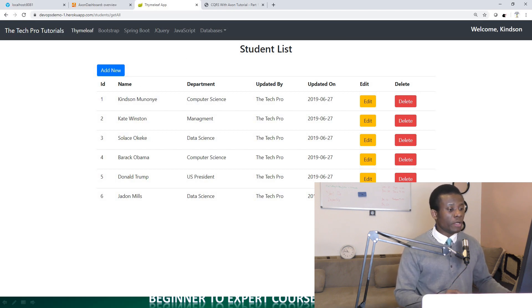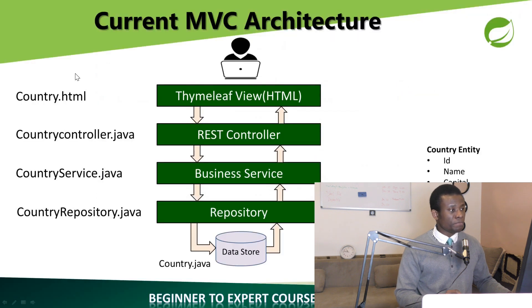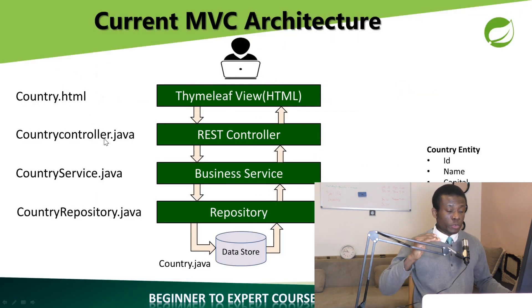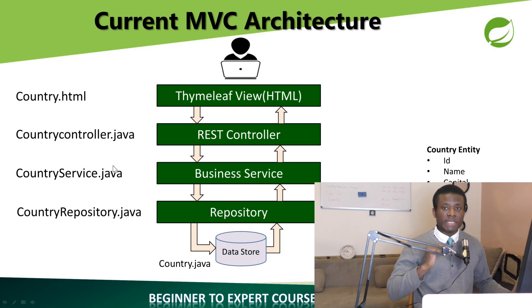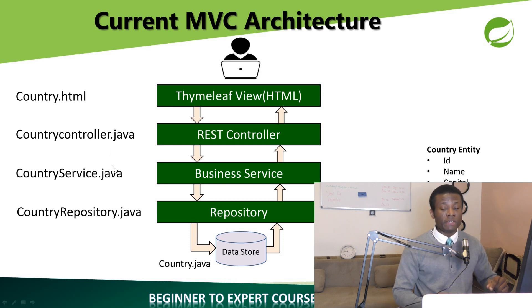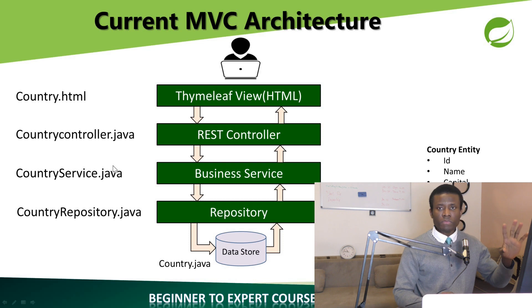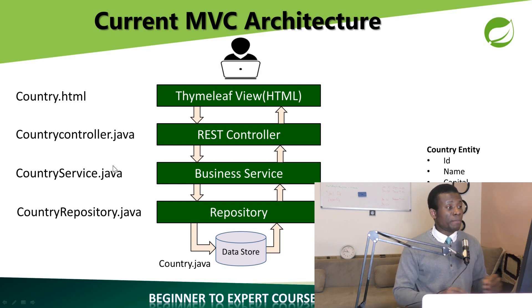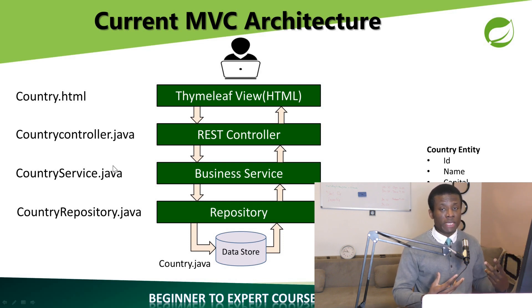You simply create all these files: the country.html, the country controller, the country service, the country repository, and country.java representing the model. Once you have all these files you can hook them up together and you have a complete application.